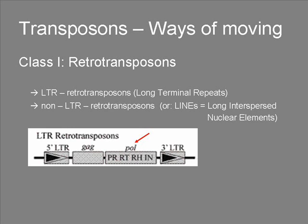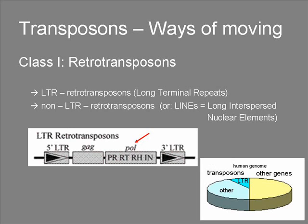However, there are no Env genes encoded in the transposon, which makes it different from retroviruses, in that the transposons cannot form independent infectious forms and jump from cell to cell, because there is no envelope. These LTR elements have a size of 1 to 11 kilobases and contribute to 8% of the whole human genome.